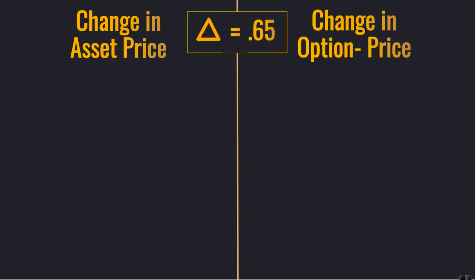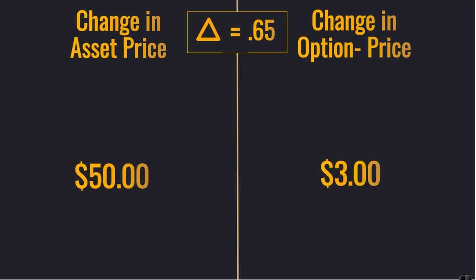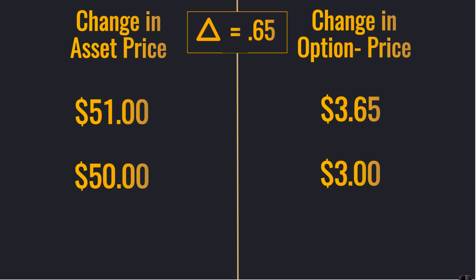Here's an example of a call option with a positive Delta. If we had an asset at $50 and a call option premium at $3, and the asset price rose $1 up to $51 and the Delta was 0.65, that option premium would change to $3.65.